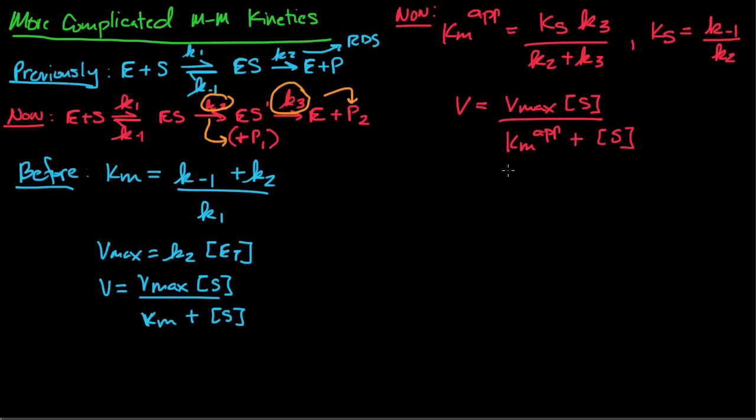Instead, Vmax is going to be equal to K2 times K3 divided by K2 plus K3 times your total concentration of enzyme. Now, the assumption we're going to make is that either K2 or K3 is really big, and the one that's small is going to be the rate determining step. For example, let's say that K2 was much smaller than K3.